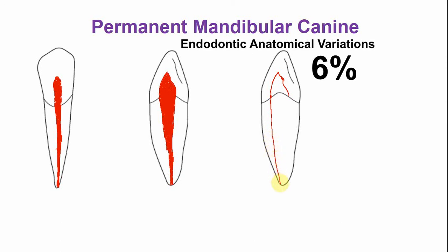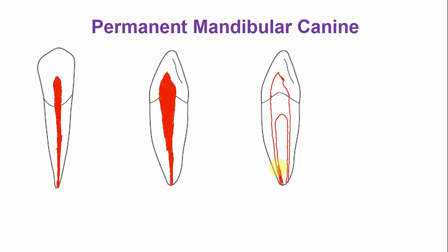This is the first root canal and this is the second root canal. In between these two root canals, which usually exit through separate apical foramina, there is dentinal tissue in between. Usually they exit through the separate apical foramen at the apex of the tooth. Sometimes the canals unite at the apex as well, but usually they exit through separate canals.